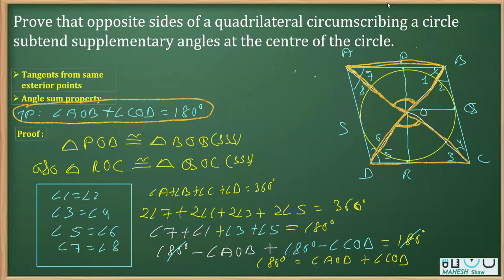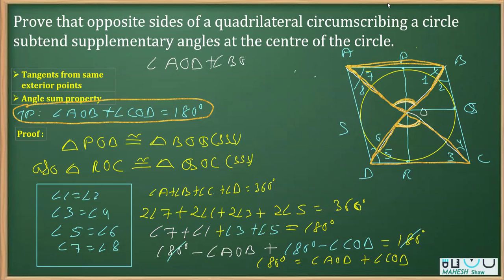There is one more thing: angles around a point sum to 360°. Since angle AOB + angle COD = 180°, the remaining angles AOD + BOC = 360° − 180° = 180°. So the other pair of opposite sides also subtend supplementary angles at the center, and the proof is complete.